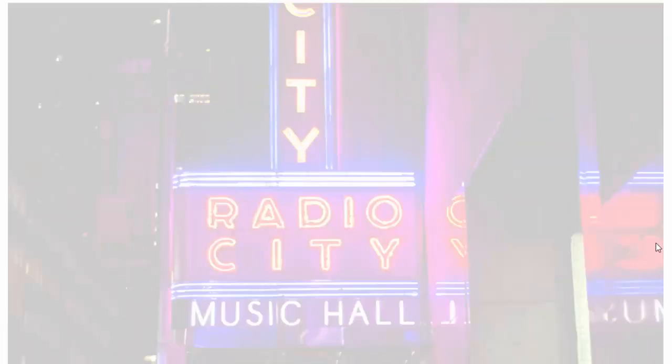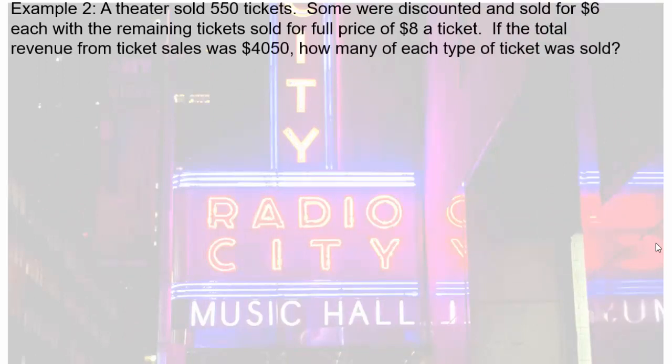Let's do a problem where a theater sold 550 tickets. Some were discounted and sold for $6 each, with the remaining tickets sold for a full price of $8 a ticket. If the total revenue from ticket sales was $4,050, how many of each type of ticket was sold? Pause the video and see what you can do. It's very important to take time and make charts so your information is organized.